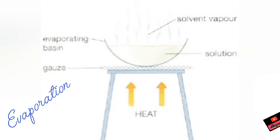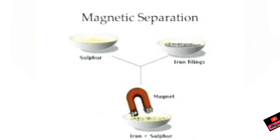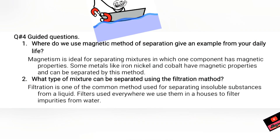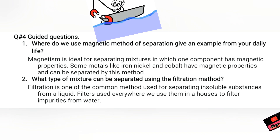Diagrams are important — learn them well so that you can identify which technique is being used. Magnetic separation is done when we are separating a mixture that contains cobalt, iron, or other metals that are attracted by magnets. Be ready with pencils and copies — we are doing question number four, part one.